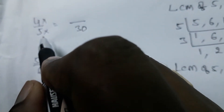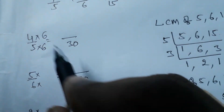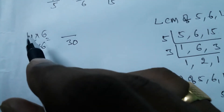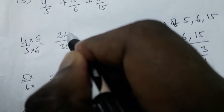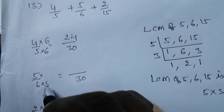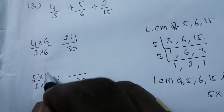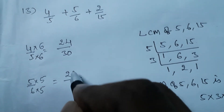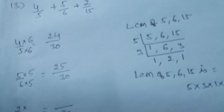For 4/5: to get denominator 30, we need to multiply 5 by 6. So we also multiply the numerator by 6: 4 × 6 = 24. The equal fraction for 4/5 is 24/30. Whatever you multiply in the denominator, you must multiply the same number in the numerator to get an equal fraction.